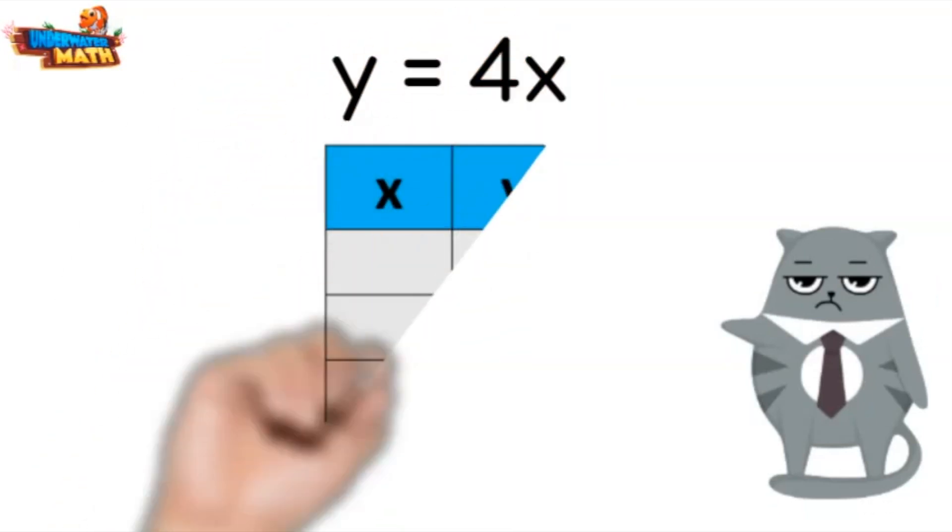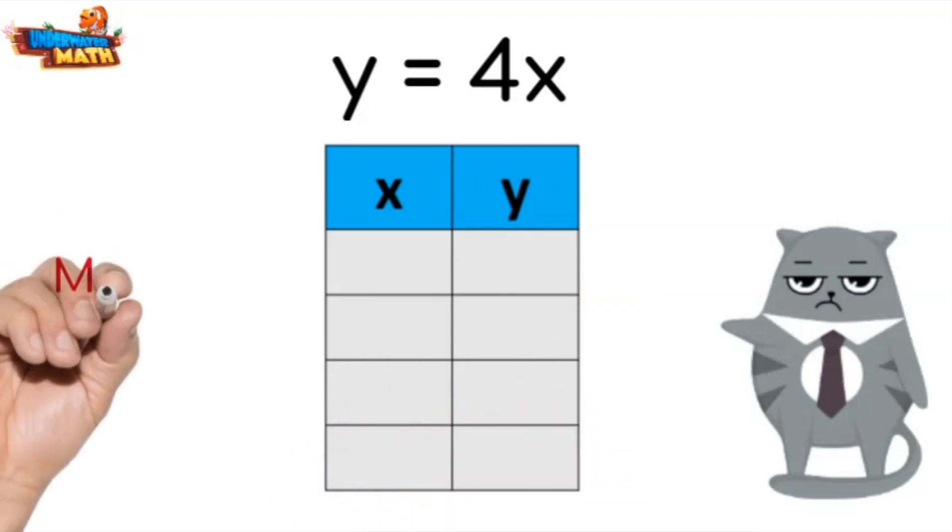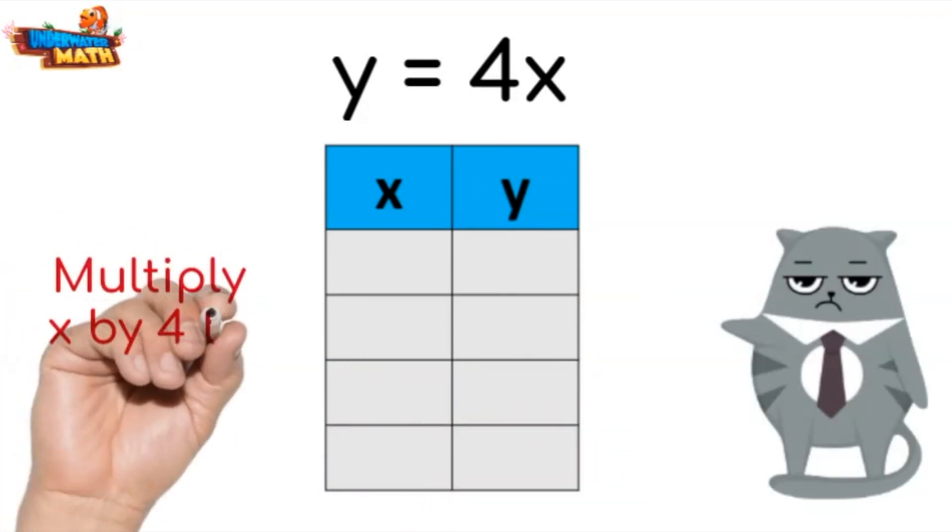First we will create a table for the rule y equals 4x. This rule means that we will multiply 4 to the number under the x column to get the y column.